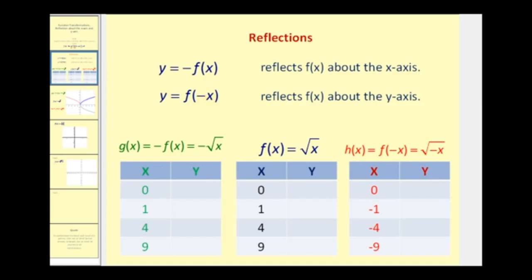Let's go ahead and take a look at this using t-tables for comparison. If f of x equals the square root of x, then to determine y we would take the square root of these x values. So the square root of 0 would be 0, square root of 1 is 1, square root of 4 would be 2, square root of 9 would be 3.